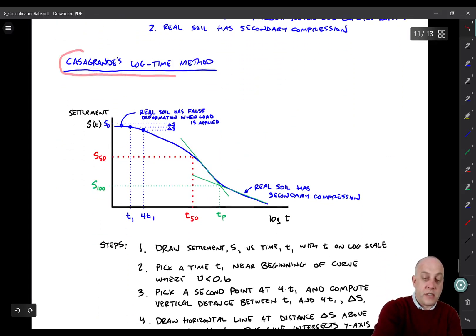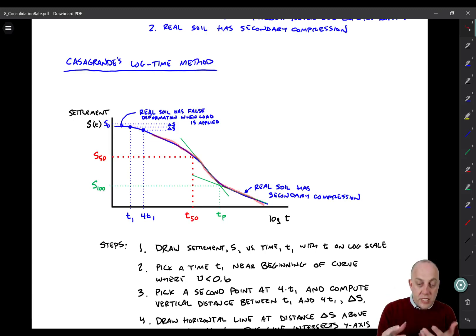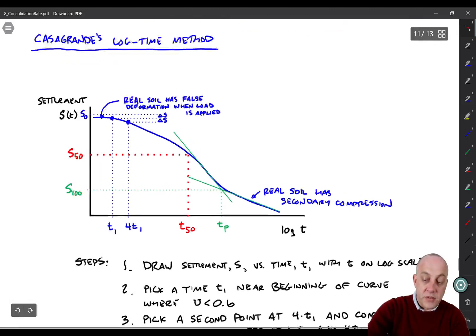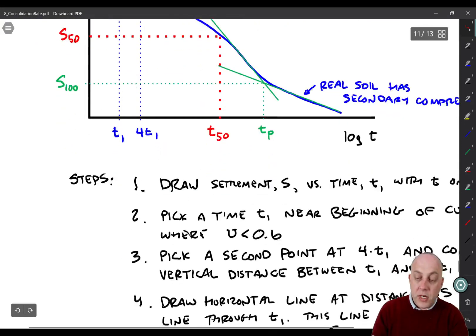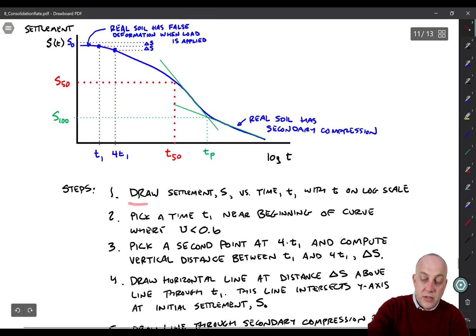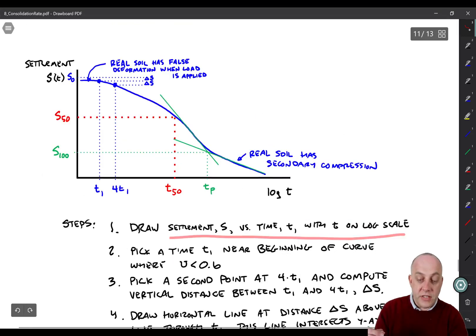The first one is the Casagrande logarithm of time method. What we'll do is plot settlement versus time on a logarithmic scale on the x-axis. This blue line would be the measurements of the laboratory data, maybe from an LVDT or maybe from a dial gauge. The first thing is that we have to get the zero reading. Let me zoom in a little bit on this. I'm going to walk you through the steps here. Draw settlement versus time with time on a log scale.